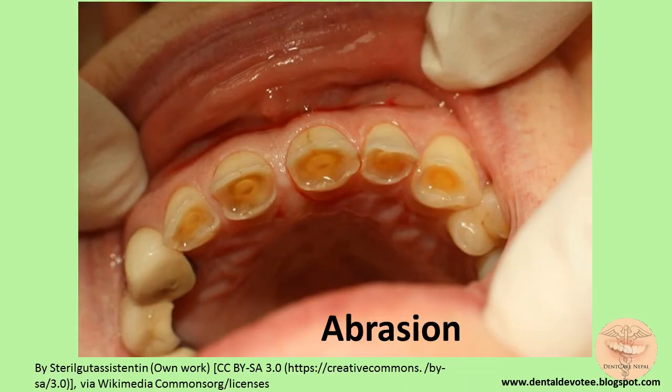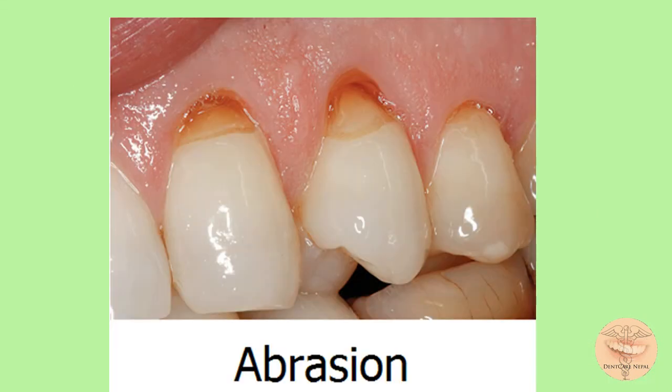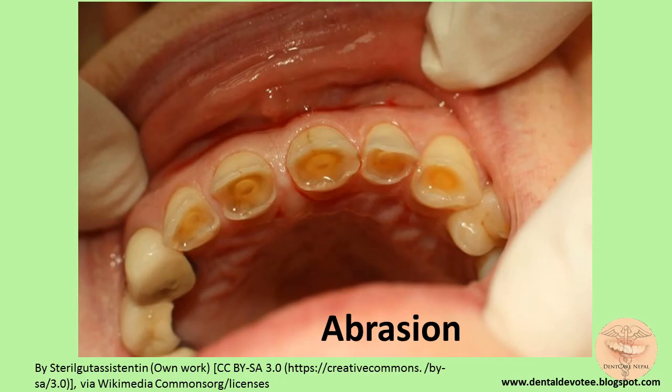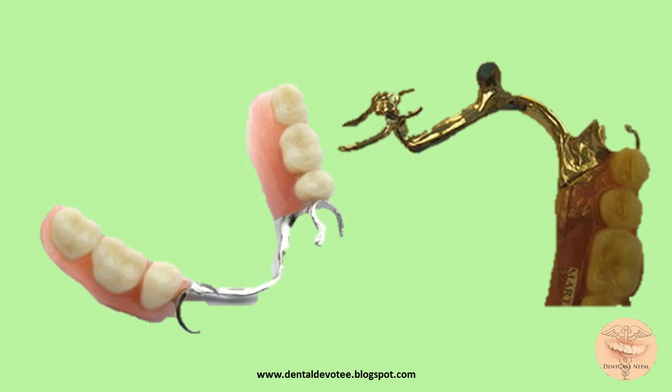Abrasion is the pathological wearing of tooth structure or dental restorations by friction with foreign substances, independent of occlusion. Toothbrush abrasion is the commonest type, caused by faulty tooth brushing technique, excessive force during tooth brushing, and a dentifrice with strong abrasive. Abrasion may also be caused by habitual chewing of betel nut, tobacco, and paan, and also by faulty clasp design in removable partial denture prostheses.